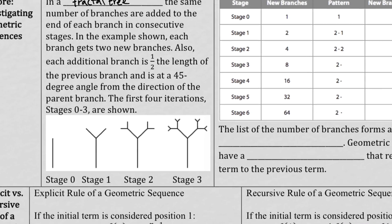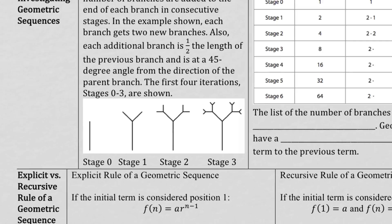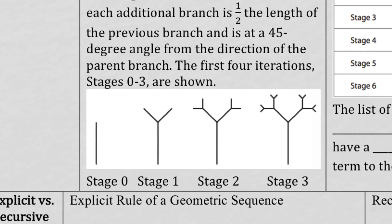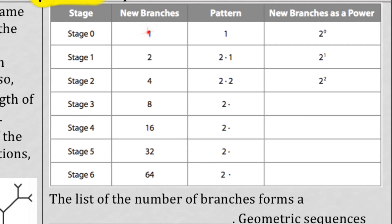Let's fill in the table with the information we have. What we care about is how many new branches the tree is getting. In stage 0, there's one new branch — the starting branch. In stage 1, there are two new branches. In stage 2, there are four new branches. In stage 3, there are eight new branches. So: 1, 2, 4, 8. Hopefully you can see the pattern right away — the numbers are doubling.